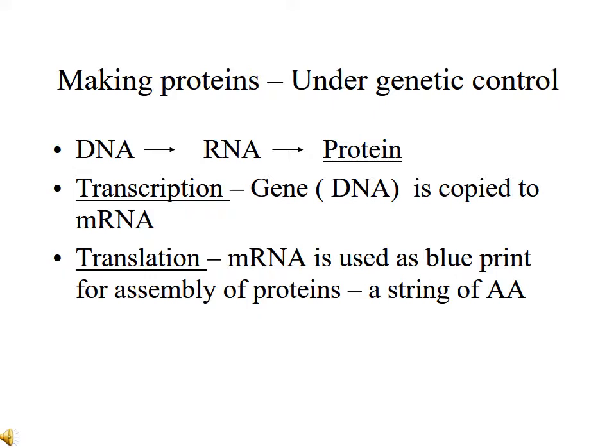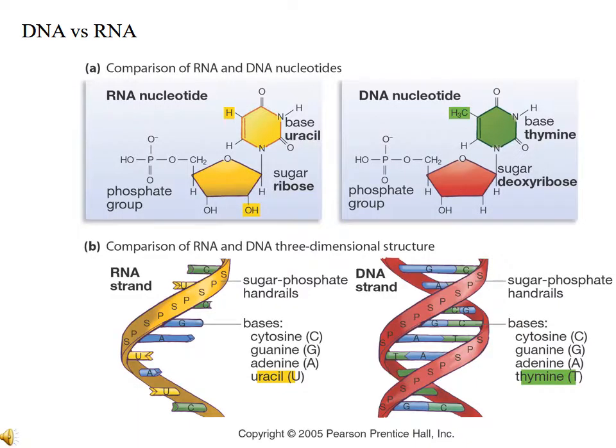Making proteins is under genetic control. Our basic central dogma: DNA goes to RNA, and RNA goes to protein. The process of going from DNA to RNA is called transcription, and the process going from RNA to protein is called translation. In translation, a message is produced which carries the blueprint for the assembly of proteins. In this section, we will look carefully at transcription and translation. But before we can proceed, we need to understand a little bit more about DNA and RNA.